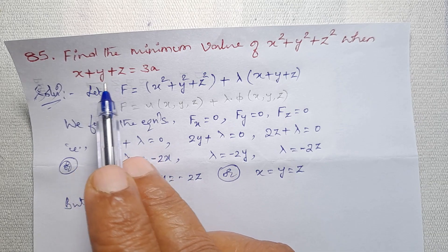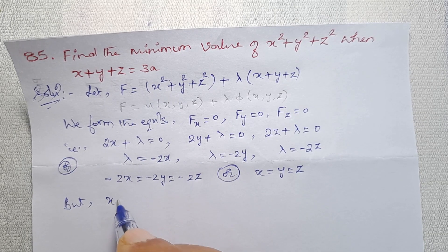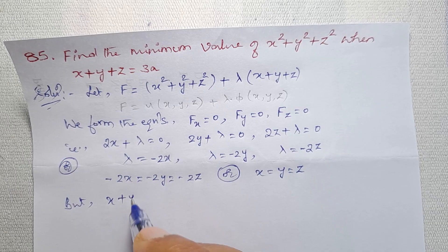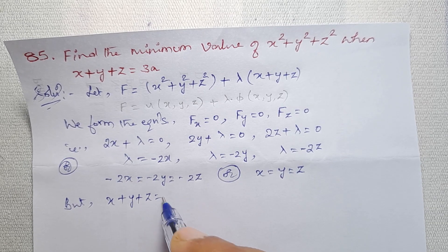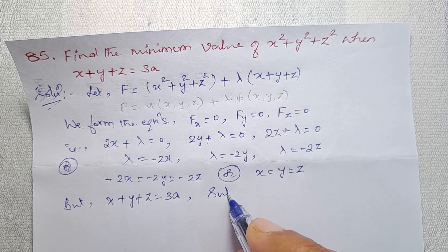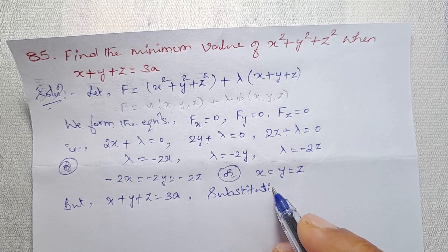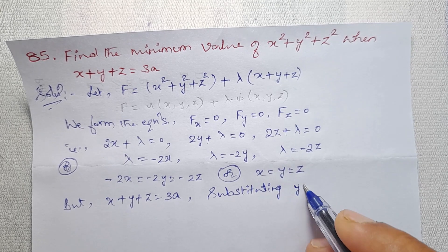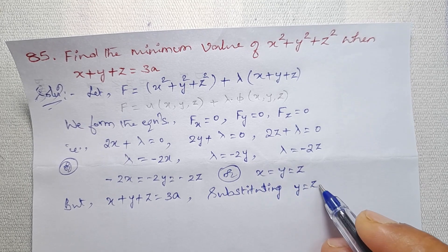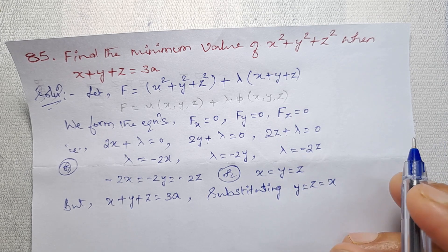In this problem, it is given that x + y + z = 3a. Substituting y = z = x into the constraint gives x + x + x = 3x = 3a, so 3 cancels and x = a. Therefore y = a and z = a.